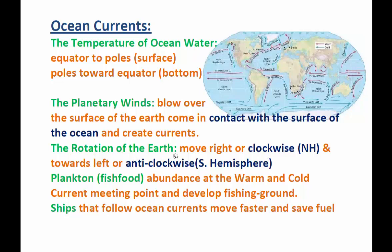Ocean currents are also very useful, especially for fishermen. When warm and cold currents meet at a certain point, they develop a fishing ground — producing a lot of plankton, which is fish food. Fish are always searching for plankton to feed themselves, so fishermen can go to these areas and catch a lot of fish. For ships, following the direction of ocean currents allows them to move much faster and save a lot of fuel.